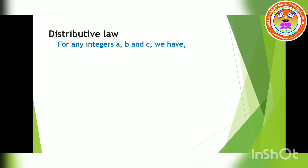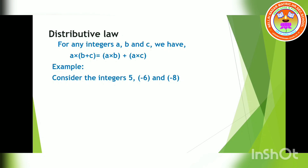Next, we learn distributive law. For any integers a, b and c, we have a into (b + c) is equal to a into b plus a into c — that is, a is distributed with b and c. Consider the integers 5, minus 6 and minus 8. Taking the LHS: a into (b + c), substituting 5 into (minus 6 plus minus 8).